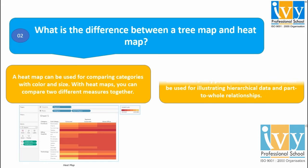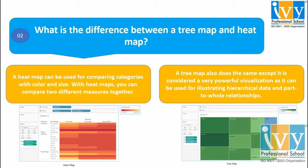Whereas a tree map does the same, except it is considered a very powerful visualization as it can be used for illustrating hierarchical data and part-to-whole relationships. That is the difference between a tree map and a heat map.